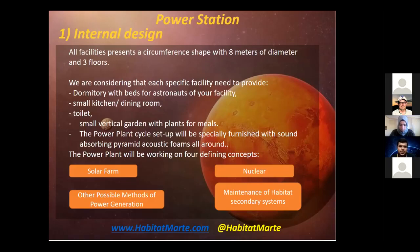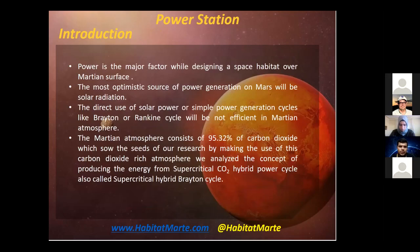The power plant cycle setup will be especially furnished with sound-absorbing pyramid acoustic forms. The power plant will work on four different concepts: the first is a solar farm, the second is a nuclear power plant, the third covers other possible methods of power generation on the Martian surface, and the fourth is maintenance of habitat secondary systems.